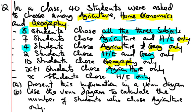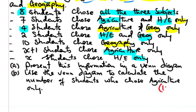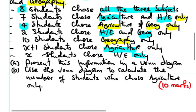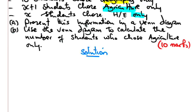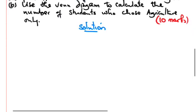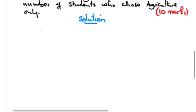We're asked to use the Venn diagram to find the number of students who chose Agriculture only. So let's draw the Venn diagram.